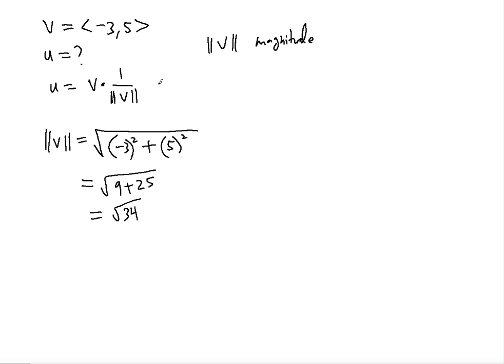So now we can finish this formula. It's going to be the given vector with its components multiplied by 1 over the magnitude, which is 1 over √34. So as a result, this gives us